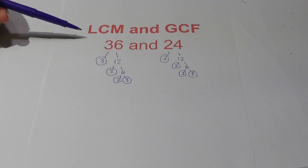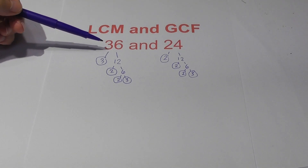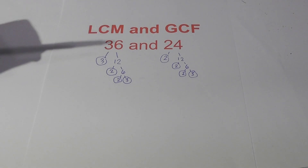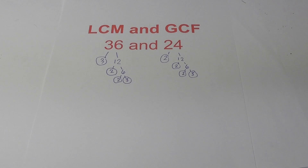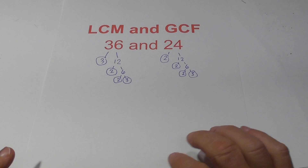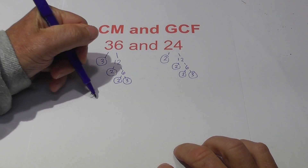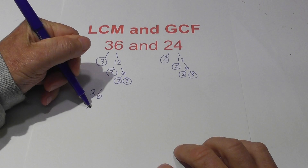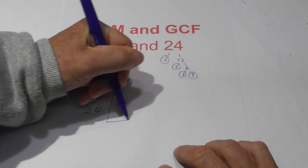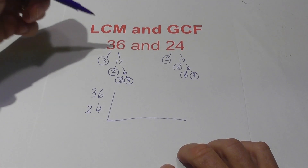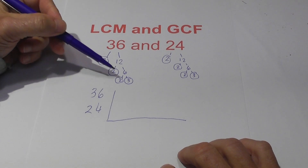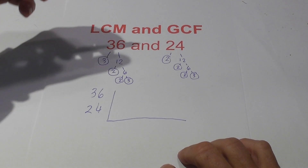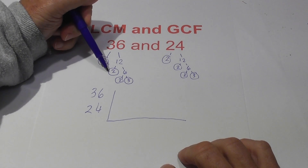The technique I use requires you to find the prime factors, and I like to use a factor tree. I went ahead and created a factor tree for 36 and 24. We are going to show how to find the least common multiple and greatest common factor of 2 numbers. This chart is the key — it helps keep you organized. Once you have your prime numbers, you write them in this chart, starting with the lowest prime number first.